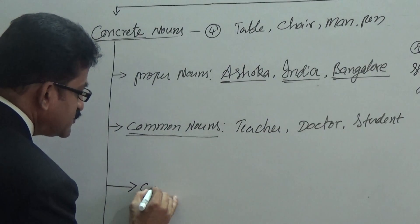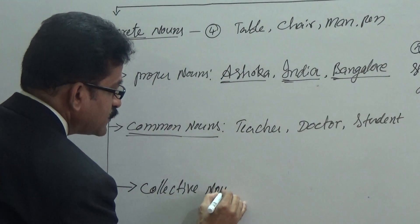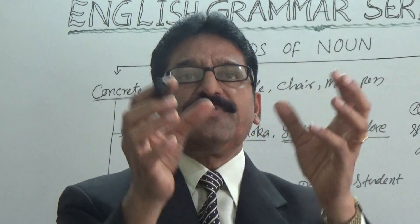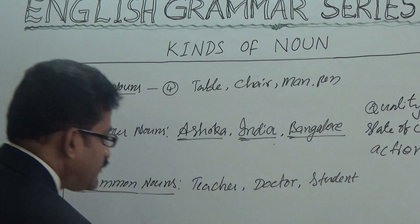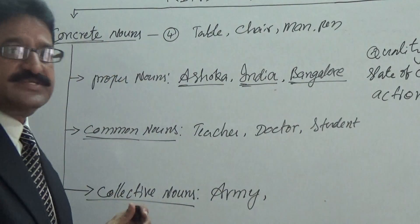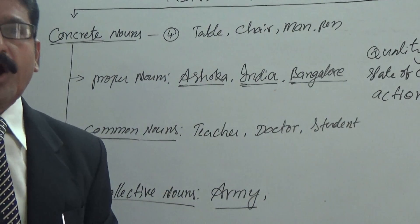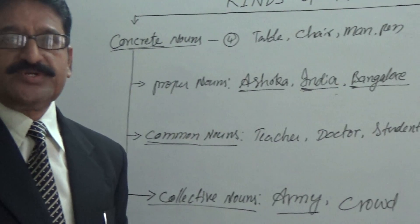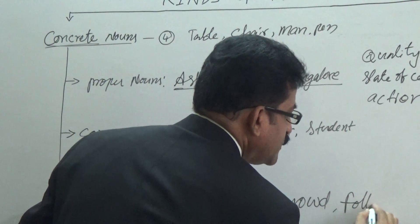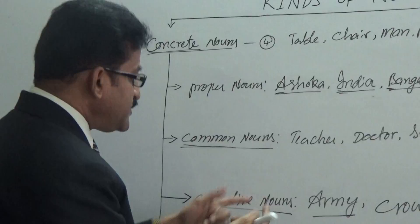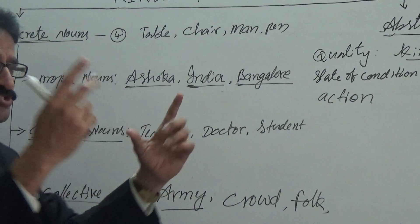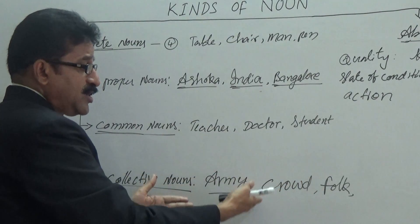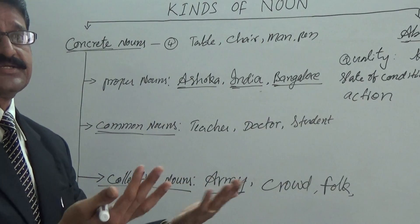The third one is collective nouns. The name or noun which can be used for a group of people, things, or animals. For example, army — a collection or group of soldiers. Crowd — a group of people. Folk — a group of animals or birds. These are collective nouns.